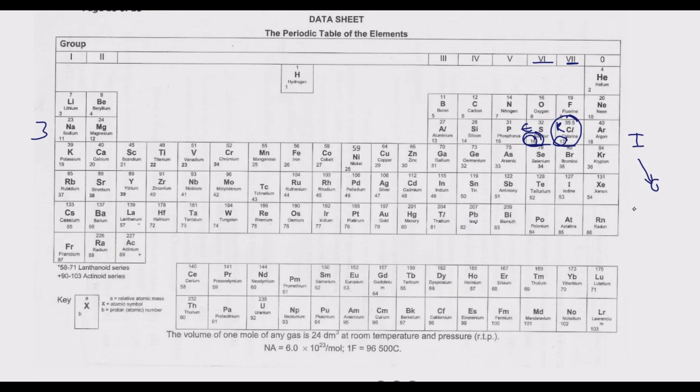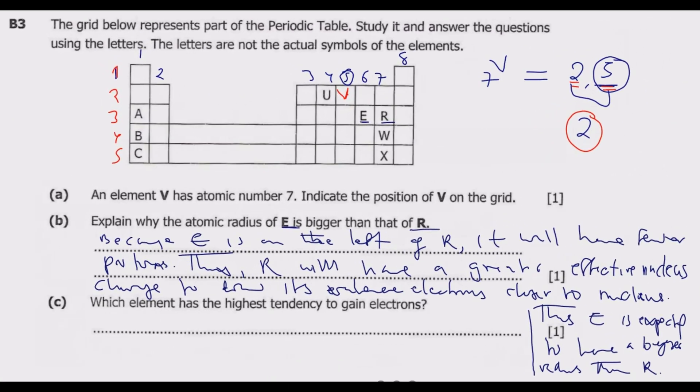Question C: Which element has the highest tendency to gain electrons? So the elements that gain electrons are non-metals. So if you look at non-metals, which one is more reactive? The activity of non-metals increases as you go upward, with fluorine here being the most reactive. Then the activity of metals increases as you move down the group. So the one that has the highest tendency to gain electrons is R, because R is the most reactive non-metal. So the answer here is R.